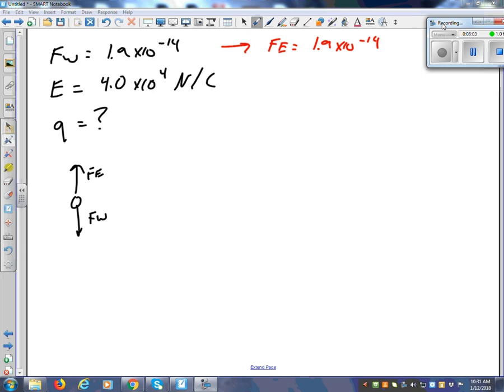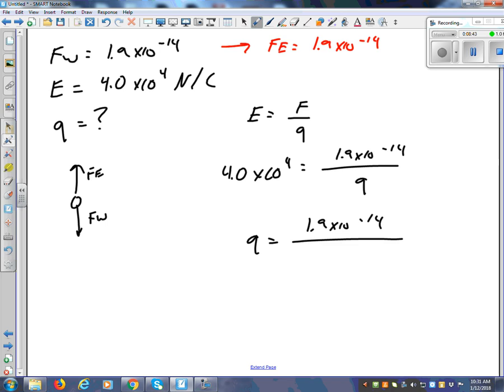So now I'm just going to plug that into E equals F over q. What's the value of E? This one here. 4.0 times 10 to the 4. My FE is 1.9 times 10 to the minus 14 all over q. And here's where all that ability to solve equations keeps coming back. You've got to be able to do it. You've got to know how to do it without even thinking it through. You just know. You've got to swap those two out. So q is going to be 1.9 times 10 to the minus 14 divided by 4.0 times 10 to the 4. Go ahead and try that on your calculator.